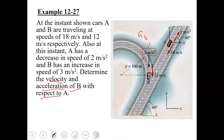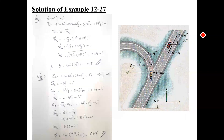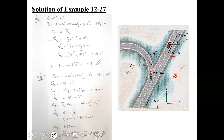As an observer sitting in car A, what would the velocity and acceleration of car B look like to you? Starting with the velocity first, using the conventional x-y coordinate system. The velocity of car A is given as 18 meters per second.